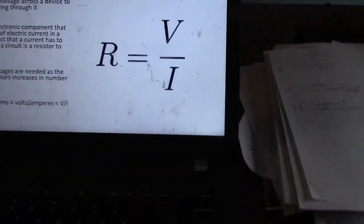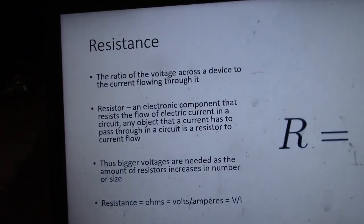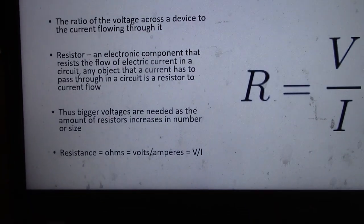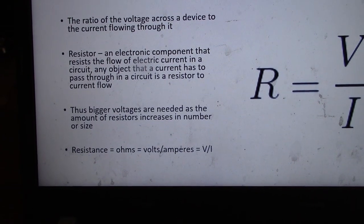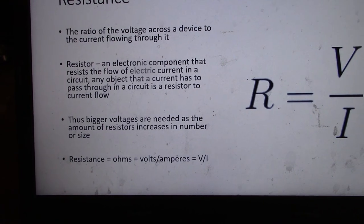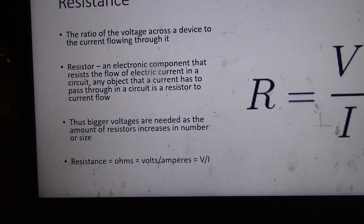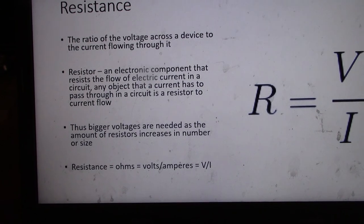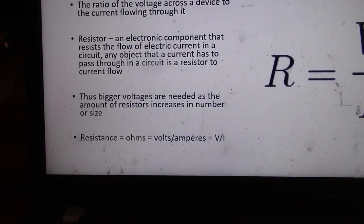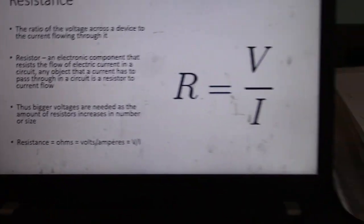V equals I times R — or R equals V over I — this is Ohm's Law. It's the ratio of voltage across a device to the current flowing through it. A resistor is an electric component that resists the flow of electric current in a circuit. Any object that a current passes through will generally take power off the circuit, so bigger voltages are needed as the number of resistors increases.